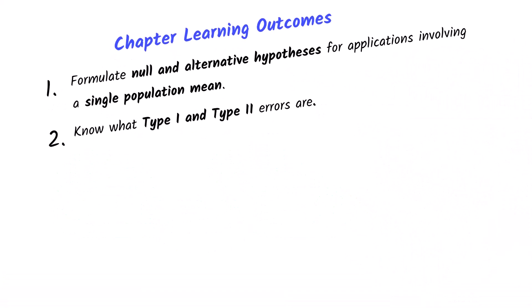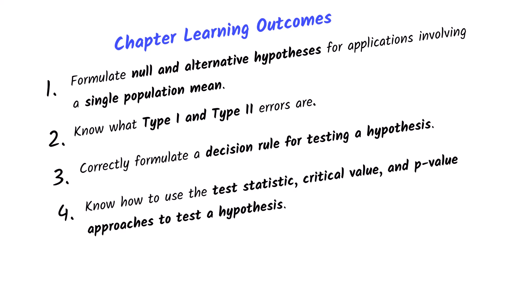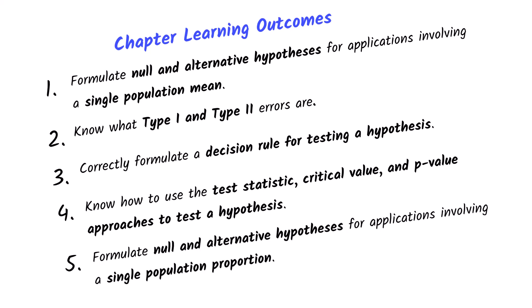In this video, we will first go through the conceptual content on formulating hypotheses for a single population mean, as well as understand the difference between type 1 and type 2 errors. Then in the next video, we will continue the 9.1 video and talk about how to formulate a decision rule for testing a hypothesis, focusing on the critical value and p-value methods. Then in the last video, we will learn how to formulate hypotheses for a single population proportion.